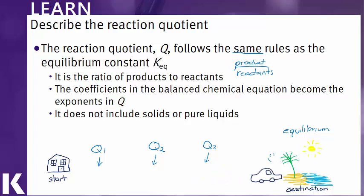Woo-hoo, we're at the beach. When we reach equilibrium, our Q value will be equal to K_eq. That's how we know we are at equilibrium.